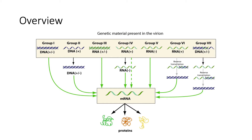Something we should keep in mind is that the host's translational machinery can only translate mRNA. This is why all of these groups in this schematic point down towards the boxed mRNA — they all have to get there. mRNA is technically defined as the positive strand because that's what is translated by ribosomes. To make a positive-stranded RNA from DNA, that DNA has to be negative. The complement of the plus strand is called the negative strand, and vice versa. So plus single-stranded RNA is technically just mRNA.